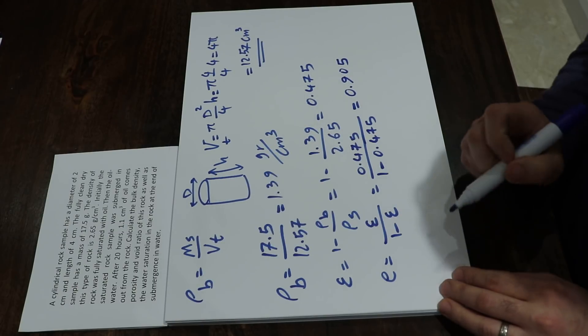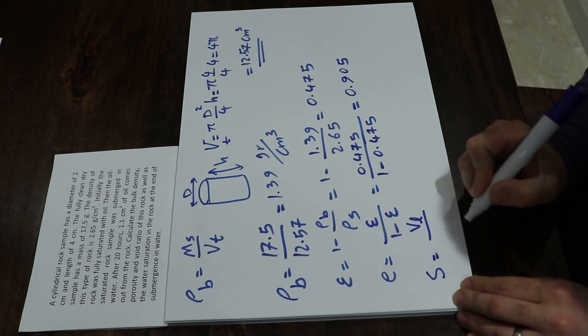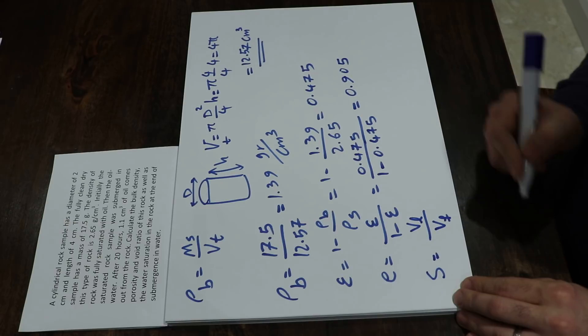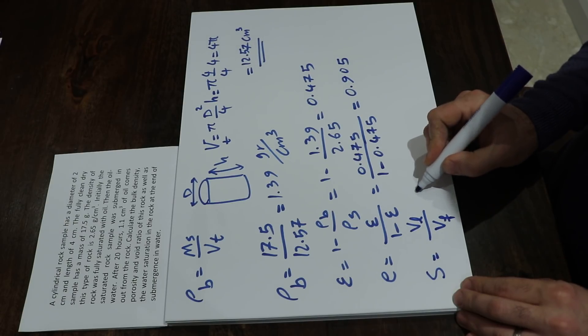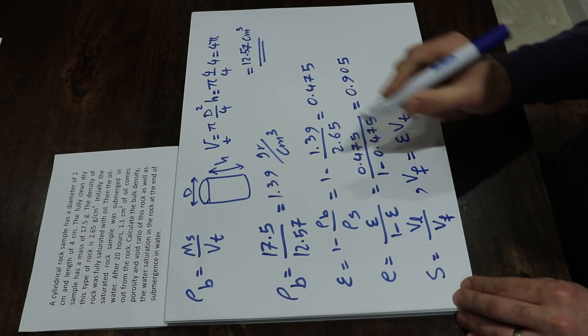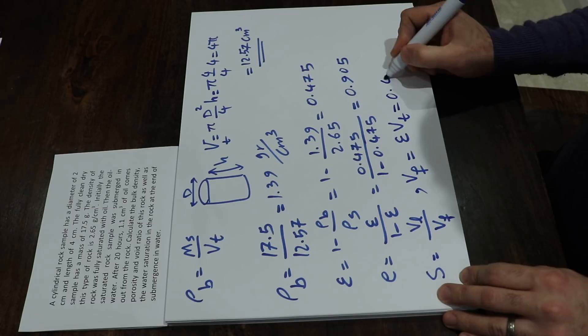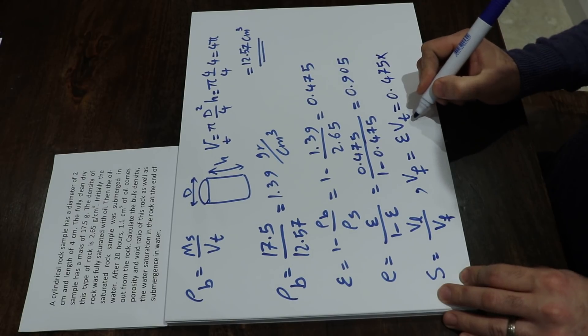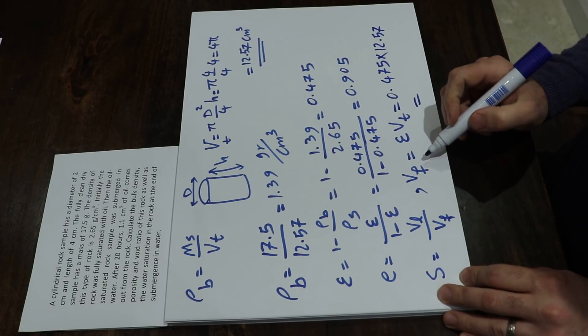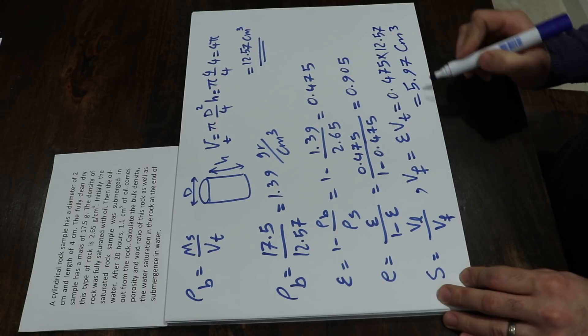The last part of the question is about saturation, and you know the saturation is equal to volume of the liquid divided by the void volume, that is volume occupied by air, gas, and liquid. We know that the void volume or pore volume is equal to porosity times V total, the volume of your sample. So, the porosity is 0.475 times the V total, that is 12.57, that will be equal to 5.97 cubic centimeters. So that is basically the pore volume.